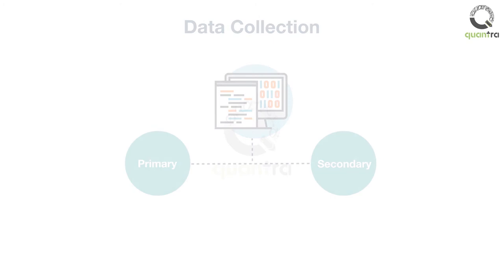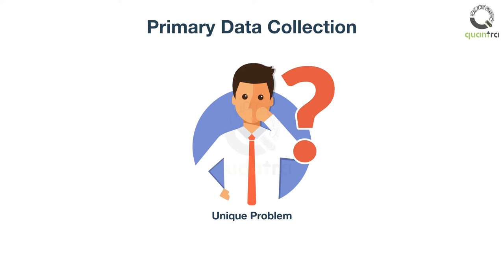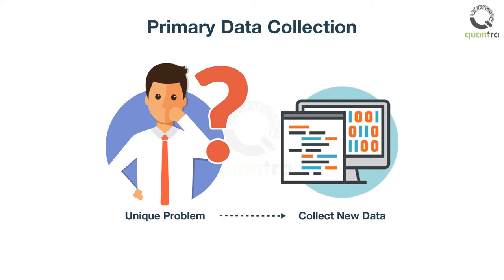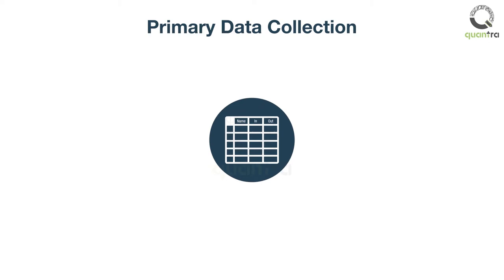When you have a unique problem and no related research is done on the subject, then you need to collect new data. This method is called primary data collection. For example, you want information on the average time that employees spend in a cafeteria across companies. There is no public data available for these.